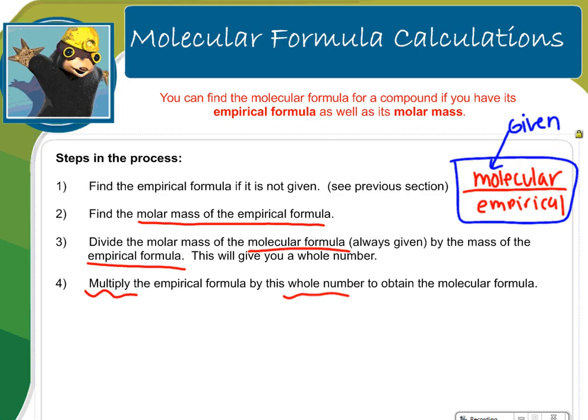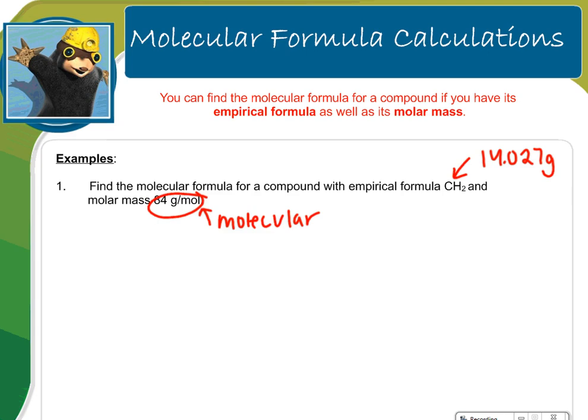The question says find the molecular formula for a compound with an empirical formula of CH2 and a molar mass of 84 grams per mole. So I went ahead and found the mass of the empirical formula. When I add up one carbon and two hydrogens, I get 14.027 grams. So this is where you want to set up that ratio.